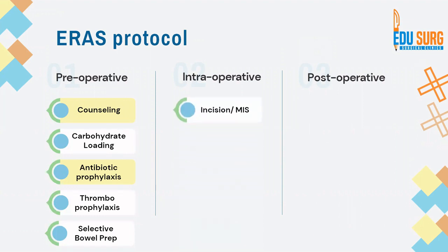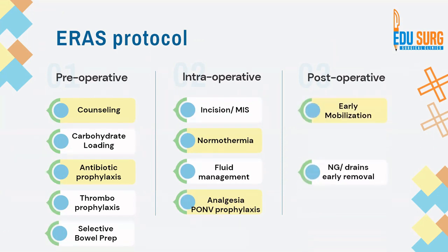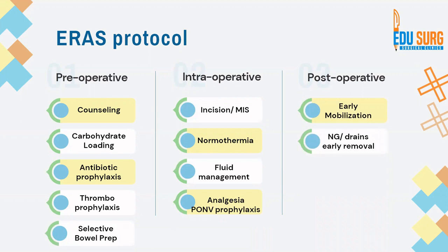Intraoperative points include adoption of minimally invasive surgery and smaller incisions, maintenance of normothermia by using bed warmers and in-line warmers, fluid management using goal-directed fluid therapy with stroke volume, cardiac output, or traditional CVP, and appropriate analgesia with beginning of post-operative nausea and vomiting prophylaxis at induction. Post-operatively, important points include early mobilization of the patient, not placing the nasogastric tube or removing it on the first post-operative day, removing drains as early as possible, avoidance of opiates and NSAIDs, and early resumption of diet.